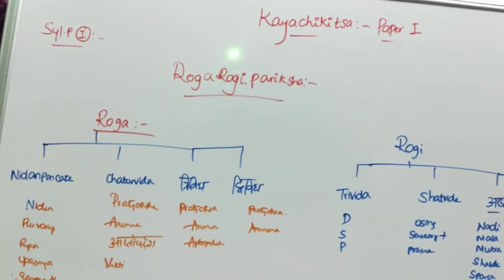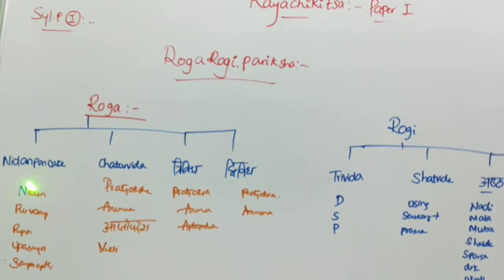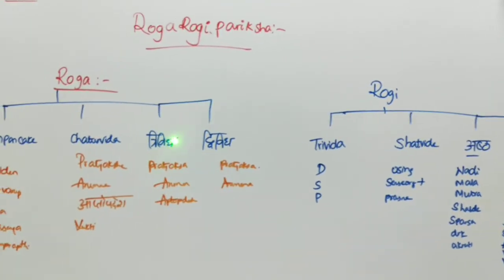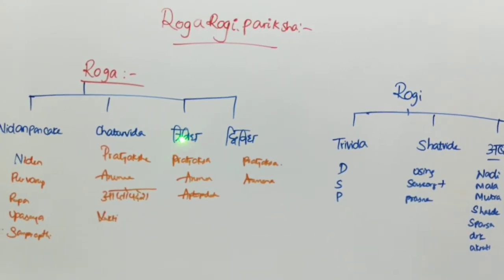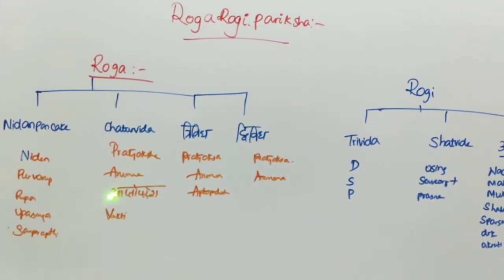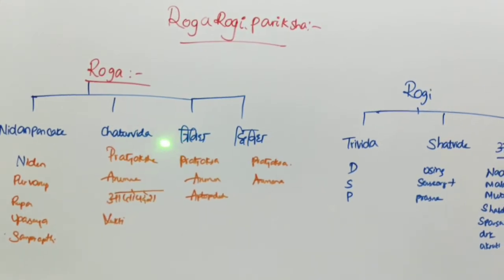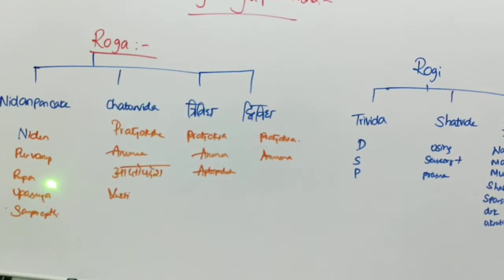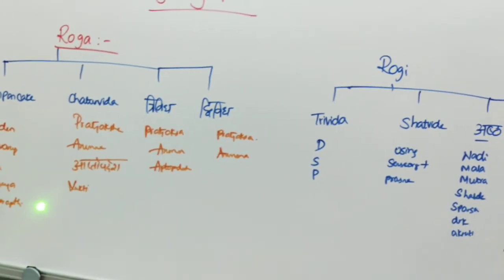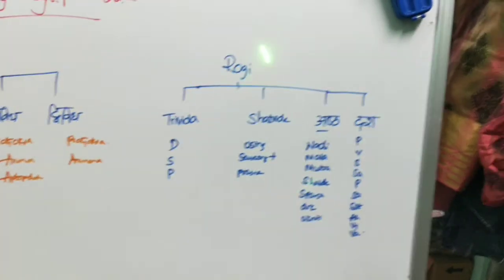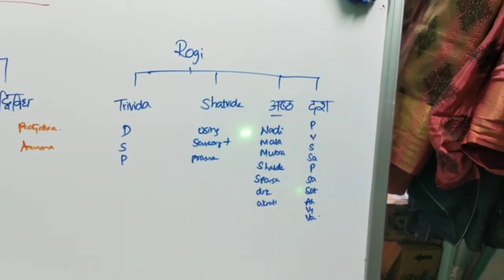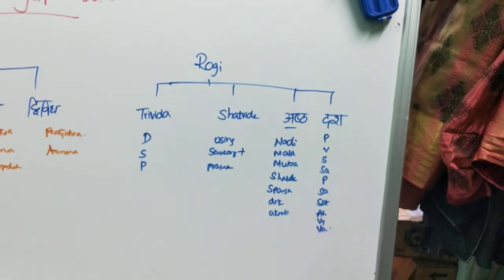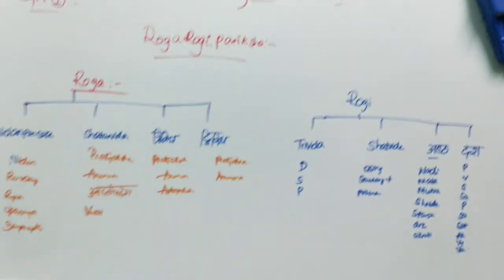In summary, Roga Pariksha includes Nidana Panchaka, Cheturvidha, Trividha, and Dvividha Pariksha. Adding Aptopadesha to Dvividha makes it Trividha; adding Yukti makes it Cheturvidha. Nidana Panchaka covers Nidana, Purvarupa, Rupa, Upashaya, and Samprapti. Rogi Pariksha includes Trividha, Shatvida, Astavida, and Dashavida Pariksha. Remembering the names is sufficient. Thank you.